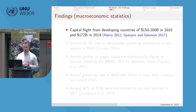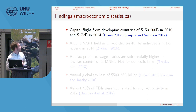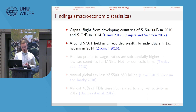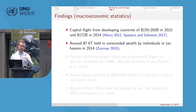Turning to what the literature actually finds: capital flight from developing countries ranges from around 150 to 200 billion US dollars — though these numbers are from around 2010–2014. Zucman's measure of unrecorded wealth — interpreted as accumulated illicit financial flows — finds a shortfall of 7.6 trillion US dollars when comparing global liabilities with assets.